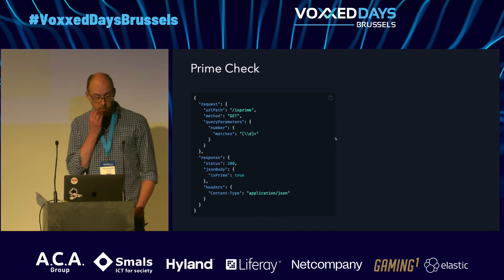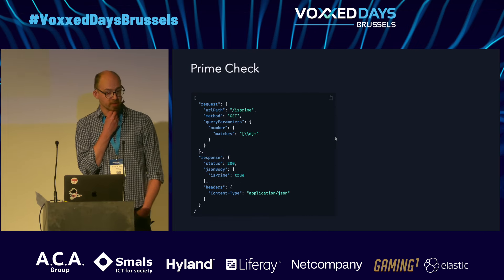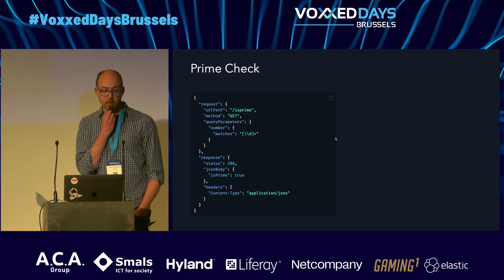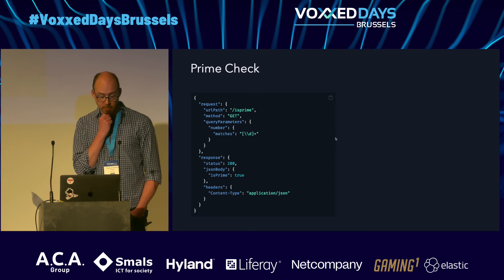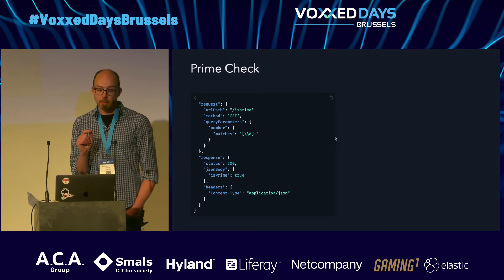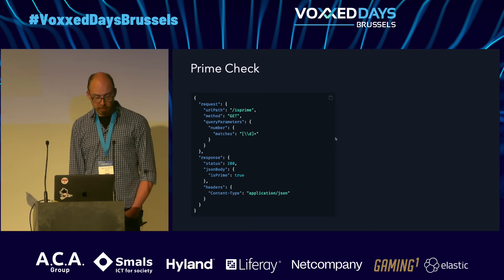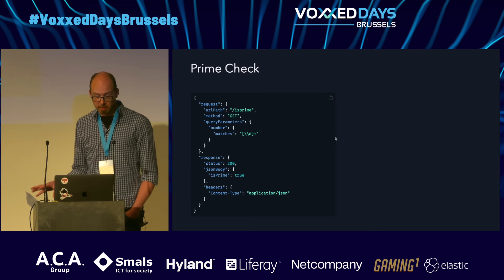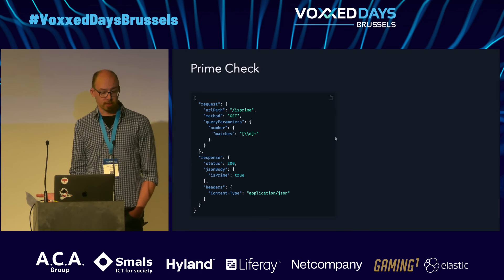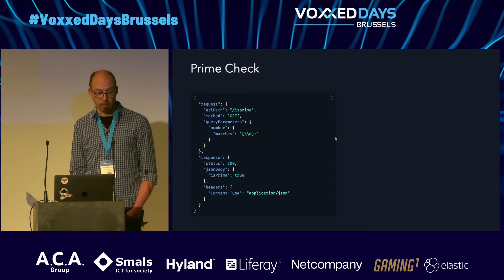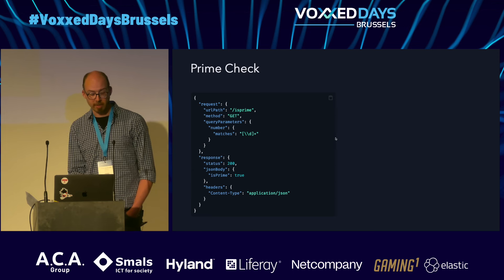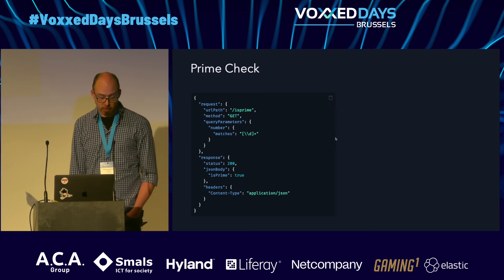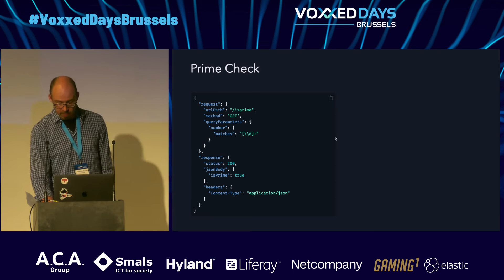A little more complicated: I have a GET request that we would like to match with a path of slash S, and in this case the request should also have a query parameter called number. And it should match a given regular expression. If all those conditions are met, then the response that WireMock will send is one with a status of 200. The body will be a JSON object with a property is prime and value true. And the content type header value will be application JSON.